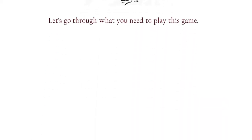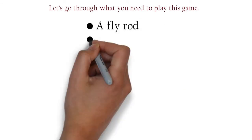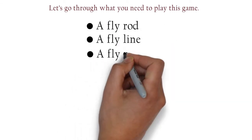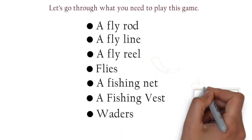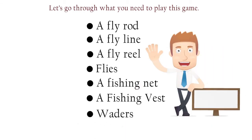What you need to fly fish: a fly rod, a fly line, a fly reel, flies, a fishing net, a fishing vest, and waders. Don't worry if you don't know what these words mean. I will explain them to you.